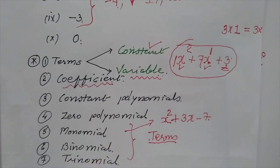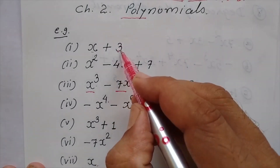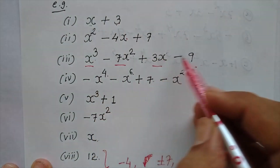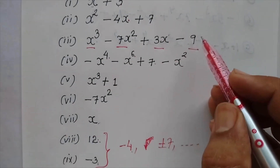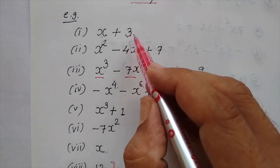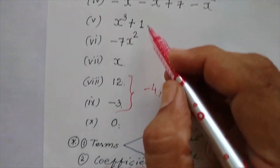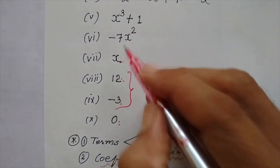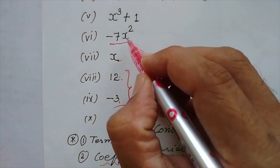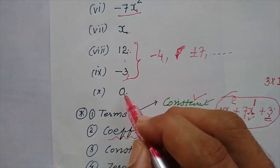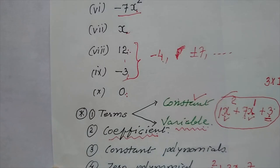So by this way, children, we have a simple introduction of polynomials. Now children, here you can see that this is which type of polynomial? This is binomial. This is trinomial. And if more than three terms are there, then we call it the word polynomial. These are also polynomials. This example is monomial — only one term. This is also a monomial but constant polynomial. This is known as zero polynomial. So now children, these are the basic things that you remember.